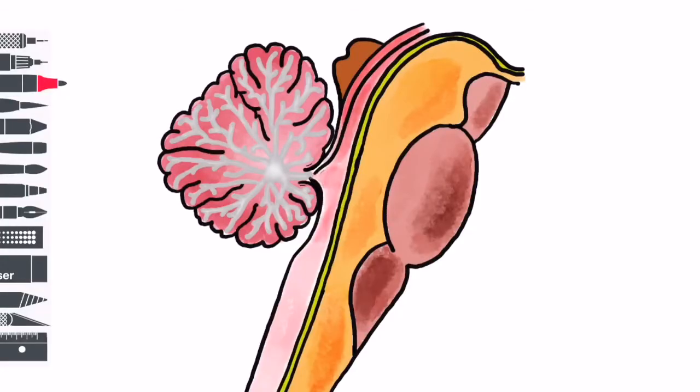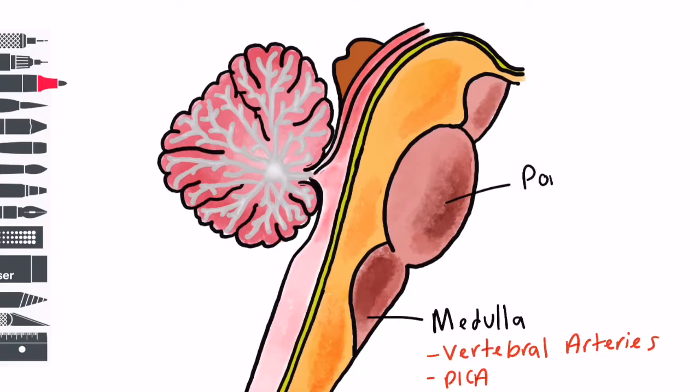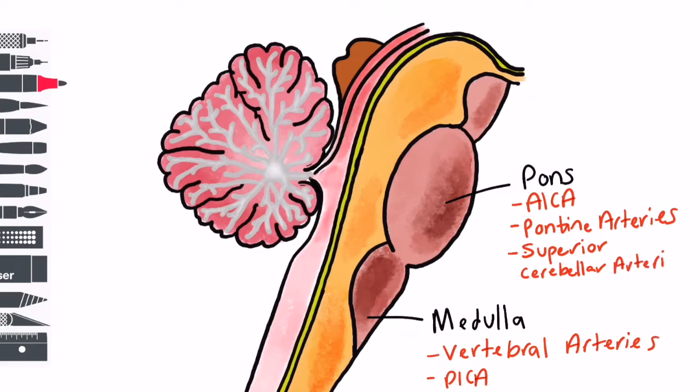Let's look at the blood supplied to particular regions of the brainstem. The medulla is predominantly supplied by the vertebral arteries and PICA. The pons is supplied by AICA, pontine arteries from the basilar artery and superior cerebellar arteries. The midbrain is supplied predominantly by the posterior cerebral arteries.